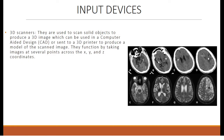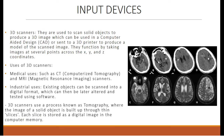3D scanners are used to scan solid objects to produce a 3D image, which can be used in computer-aided design or sent to a 3D printer to produce a model of the scanned object. They function by taking images at several points across the X, Y, and Z coordinates. Uses include medical applications such as CT and MRI scanners, and industrial uses where existing objects are scanned into digital format to be altered and tested using software. 3D scanners use a process known as tomography, where the image is built up through thin slices, each stored as a digital image. On the right, we can see an MRI scan of a person's brain.